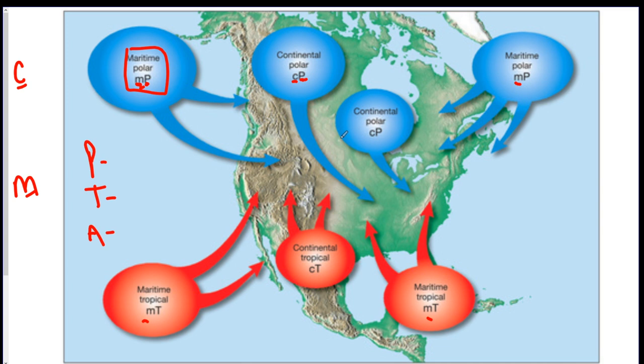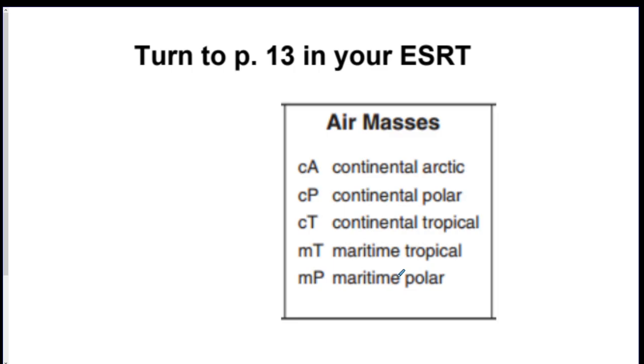The two big ones that you're going to have to know are CP, continental polar, comes from Canada and MT, maritime tropical, comes from like the Gulf of Mexico. These are listed in your reference table on page 13. There is a chart and it doesn't tell you what they exactly mean but at least you have some sort of reference if you forget.